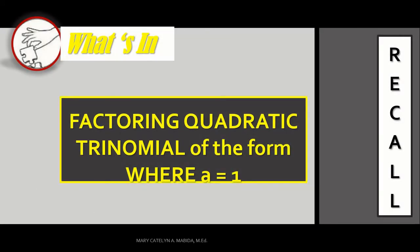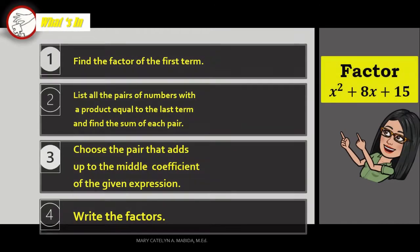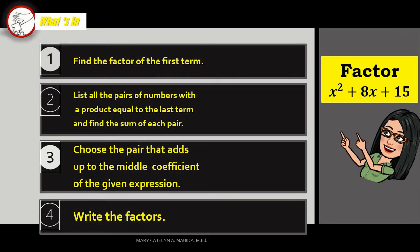What's In? To recall how to factor a trinomial of the form AX squared plus BX plus C where A is equal to 1, let us take this example. Factor X squared plus 8X plus 15.